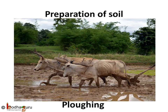First, the soil is prepared. The preparation of soil is the first step before growing a crop. One of the most important tasks in agriculture is to turn the soil and loosen it. This process of loosening and turning of the soil is called tilling or plowing. Cultivation requires a lot of work but machines have made things easier.